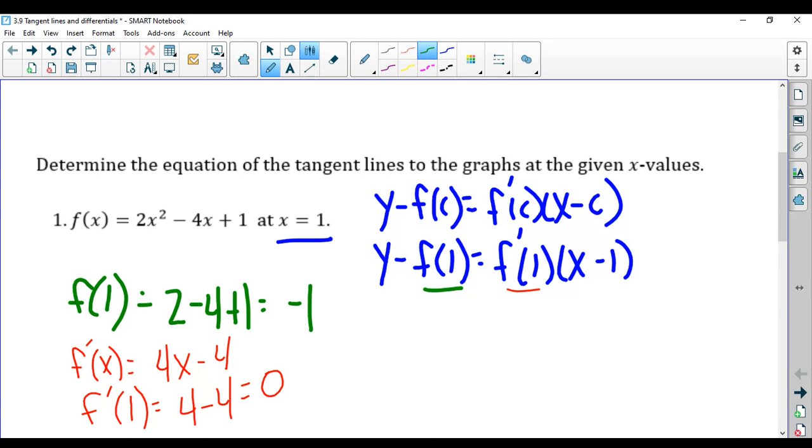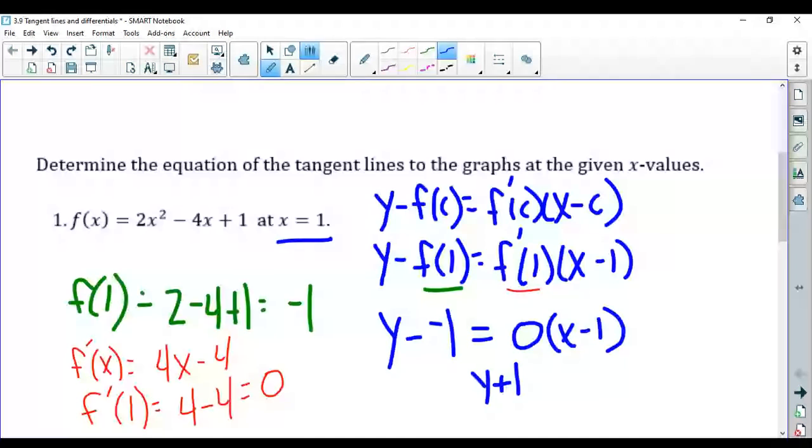So you plug these in. y minus negative 1 equals f prime of 1 which is 0 times x minus 1. So y plus 1 equals 0. You can leave it like that or you can write it as y equals negative 1. That's y equals mx plus b form. That's it.